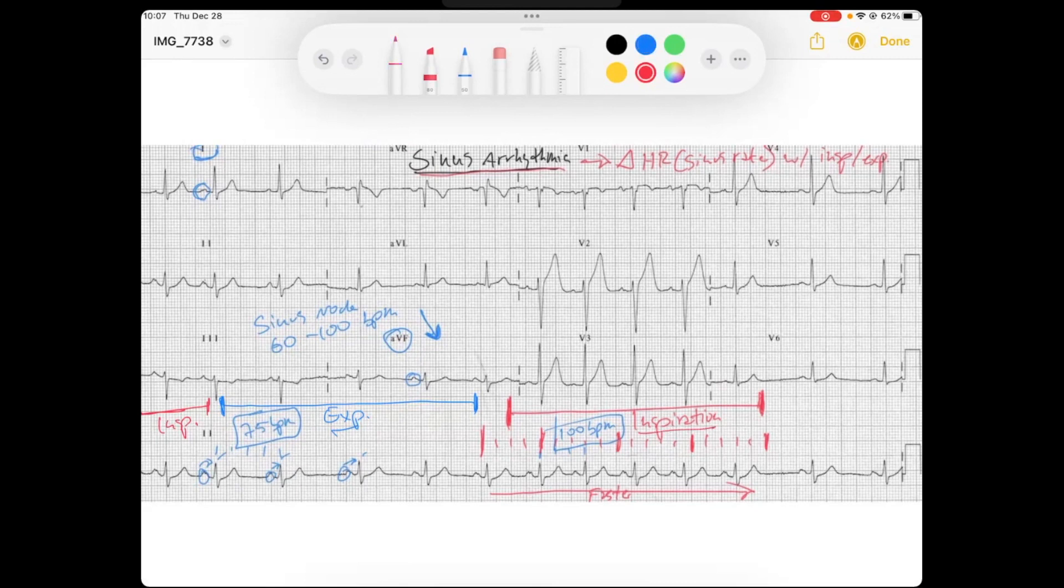Then we inspire, get faster. And then we expire again, increase our intrathoracic pressure, decrease our preload, decrease our heart rate. And so sinus arrhythmia is going to be prominent.